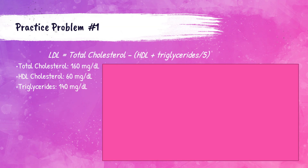I have the calculation up here. Recall, it's LDL equals total cholesterol minus (HDL plus triglycerides over five). So we want total cholesterol: 160. Then we subtract — plug and chug here. The HDL level for this patient is 60, plus the patient's triglyceride level of 140, divided by five. A common error here is students will take 60 plus 140 and then divide that whole thing by five — it is not. It's just the triglycerides over five.